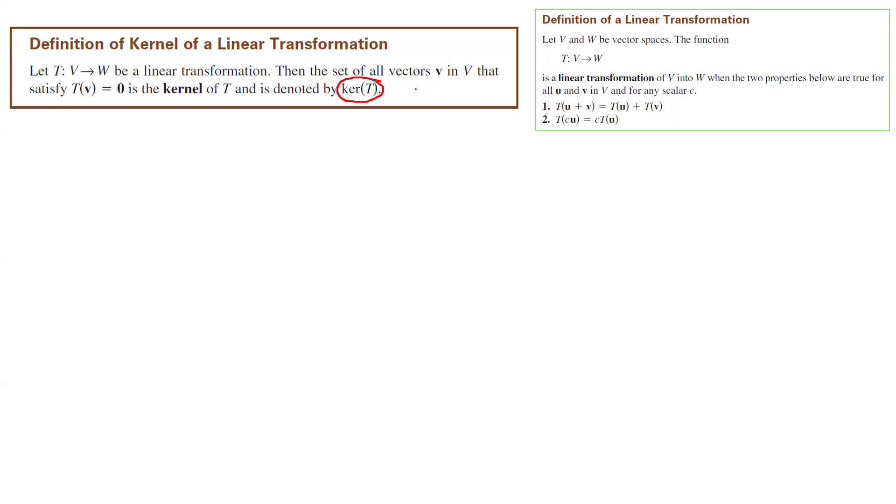So ker(T) is a subset of V. Later on we're going to see that it is a subspace as well. So ker(T) takes vectors from V such that T(v) is equal to zero.